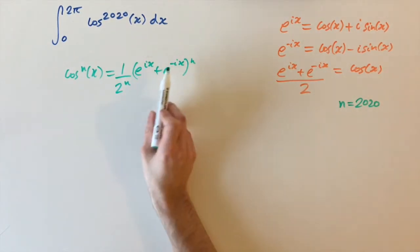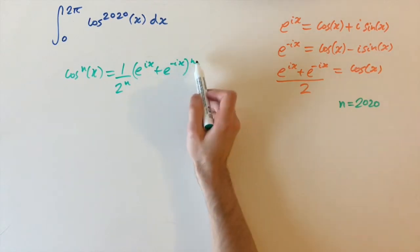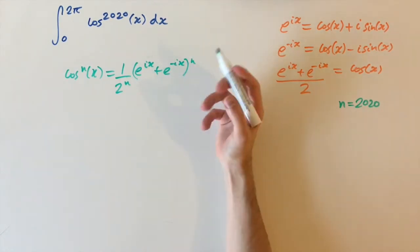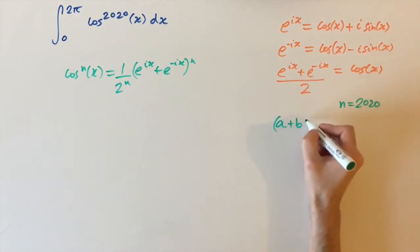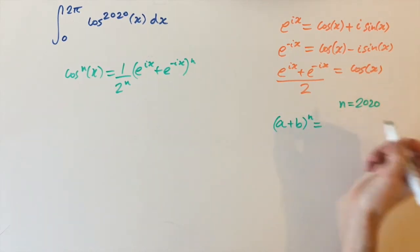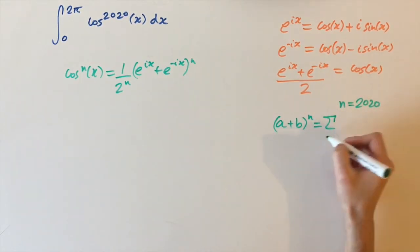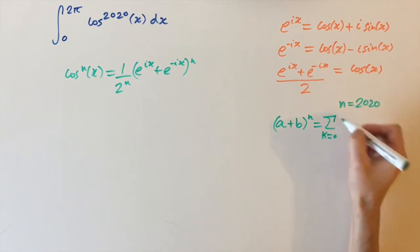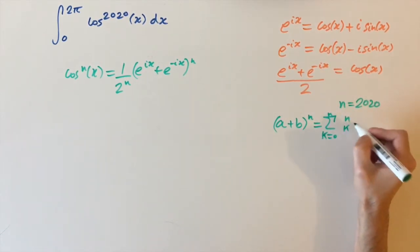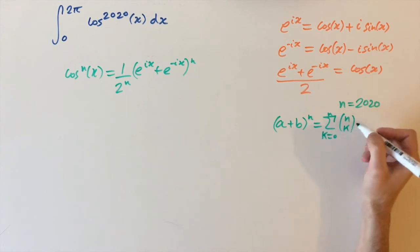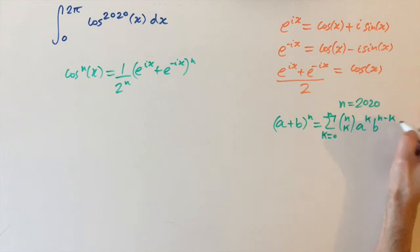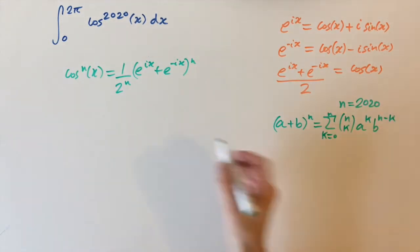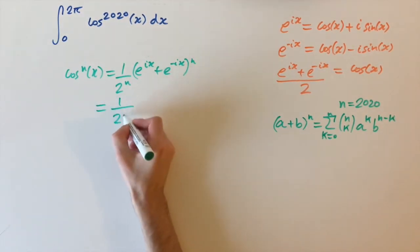We have the sum of two terms to a high power, and we can use the binomial theorem. This states that for two numbers a and b brought to the power of n, expanding all the brackets gives the sum from k equals zero up to n of n choose k times a to the power of k times b to the power of n minus k.